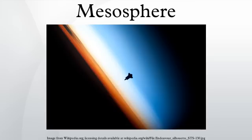The upper mesosphere is also the region of the ionosphere known as the D-layer. The D-layer is only present during the day, when some ionization occurs with nitric oxide being ionized by Lyman series alpha hydrogen radiation. The ionization is so weak that when night falls and the source of ionization is removed, the free electrons and ions recombine back into neutral molecules.